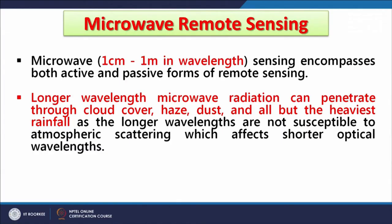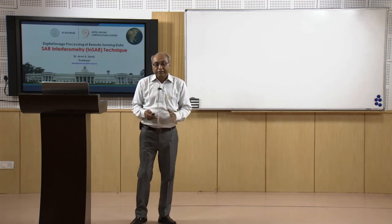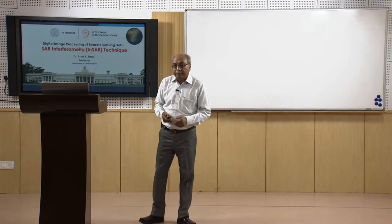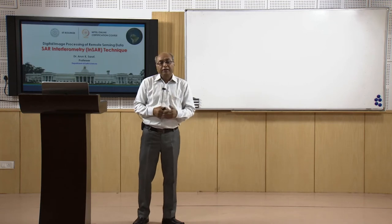Longer wavelengths are not susceptible to atmospheric scattering, which affects shorter optical wavelengths. In visible, near infrared, and thermal infrared, there are many problems and we have limited atmospheric windows. But since microwave has longer wavelengths, the question of atmospheric windows does not arise. This property allows detection of microwave energy under almost all weather and environmental conditions — whether rainy or cloudy, day or night. In active microwave remote sensing, the signal is sent by the sensor itself, backscattering is collected by the receiver, and then images are formed.